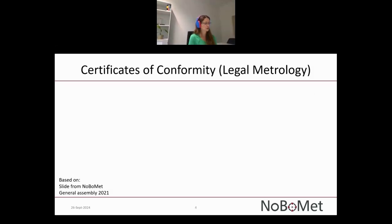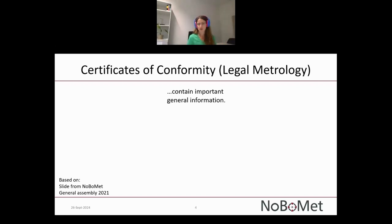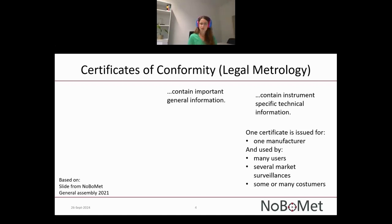One of the first issues at the very first General Assembly in 2021 was the idea of having certificates of conformity in legal metrology. Our certificates of conformity contain important general information, as well as instrument-specific technical information. Generally, we have one certificate issued for just one manufacturer, but it is used by many users — several market surveillances throughout the European Union, as well as many customers, depending on the type of measuring instrument.